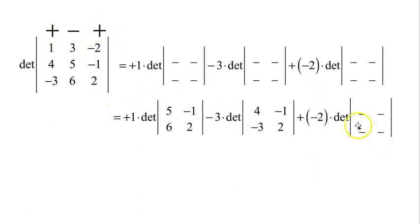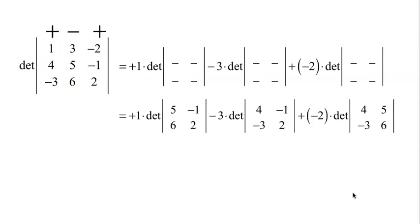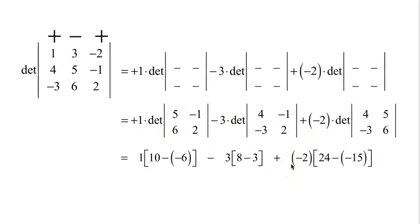Plus negative 2 — we need to determine that minor. Cross out the row that negative 2 is in, cross out the column that negative 2 is in, and we have [4, 5; -3, 6]. So now we need to evaluate the 2 by 2 matrices and multiply them by the multiplier in front.